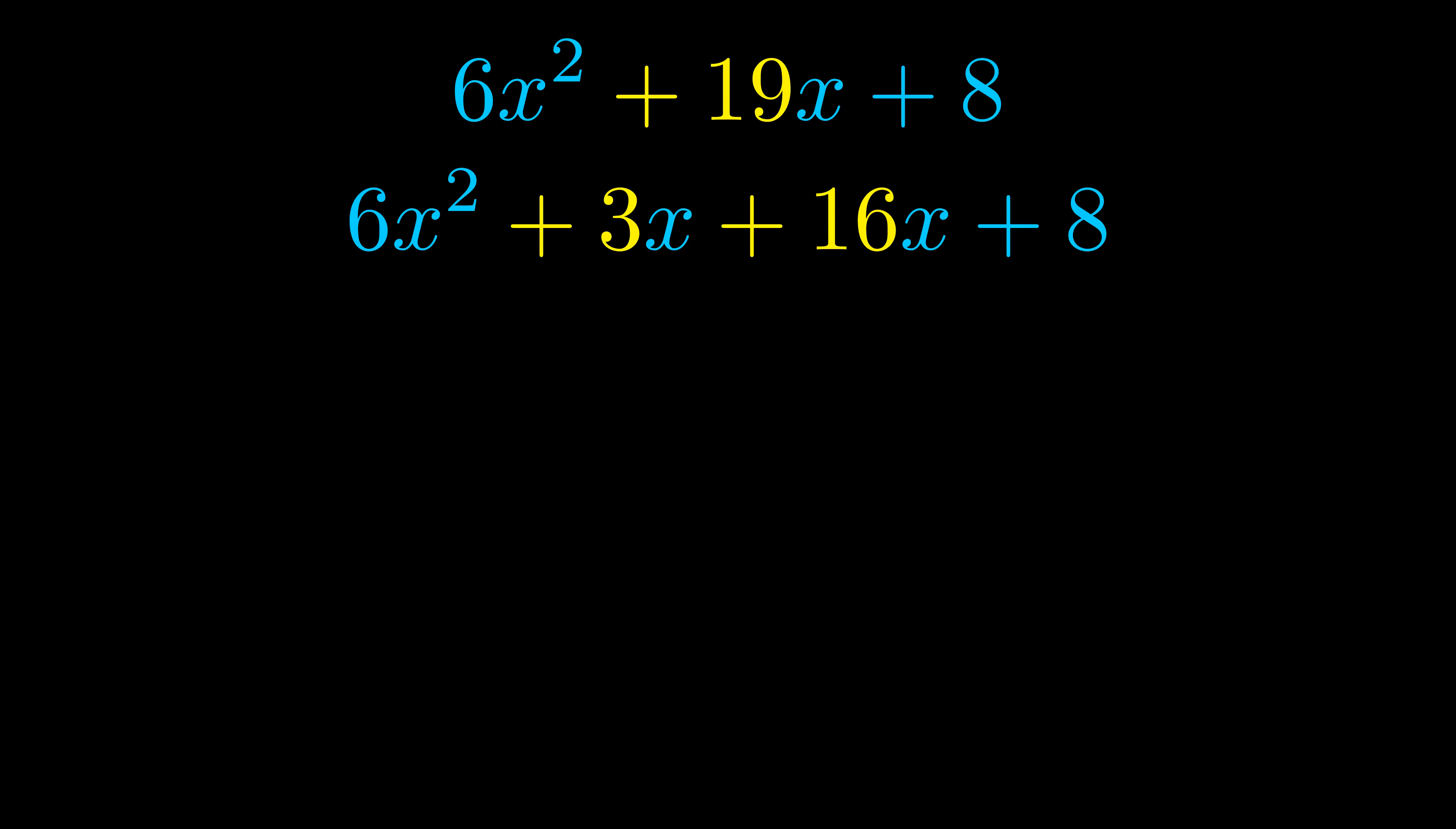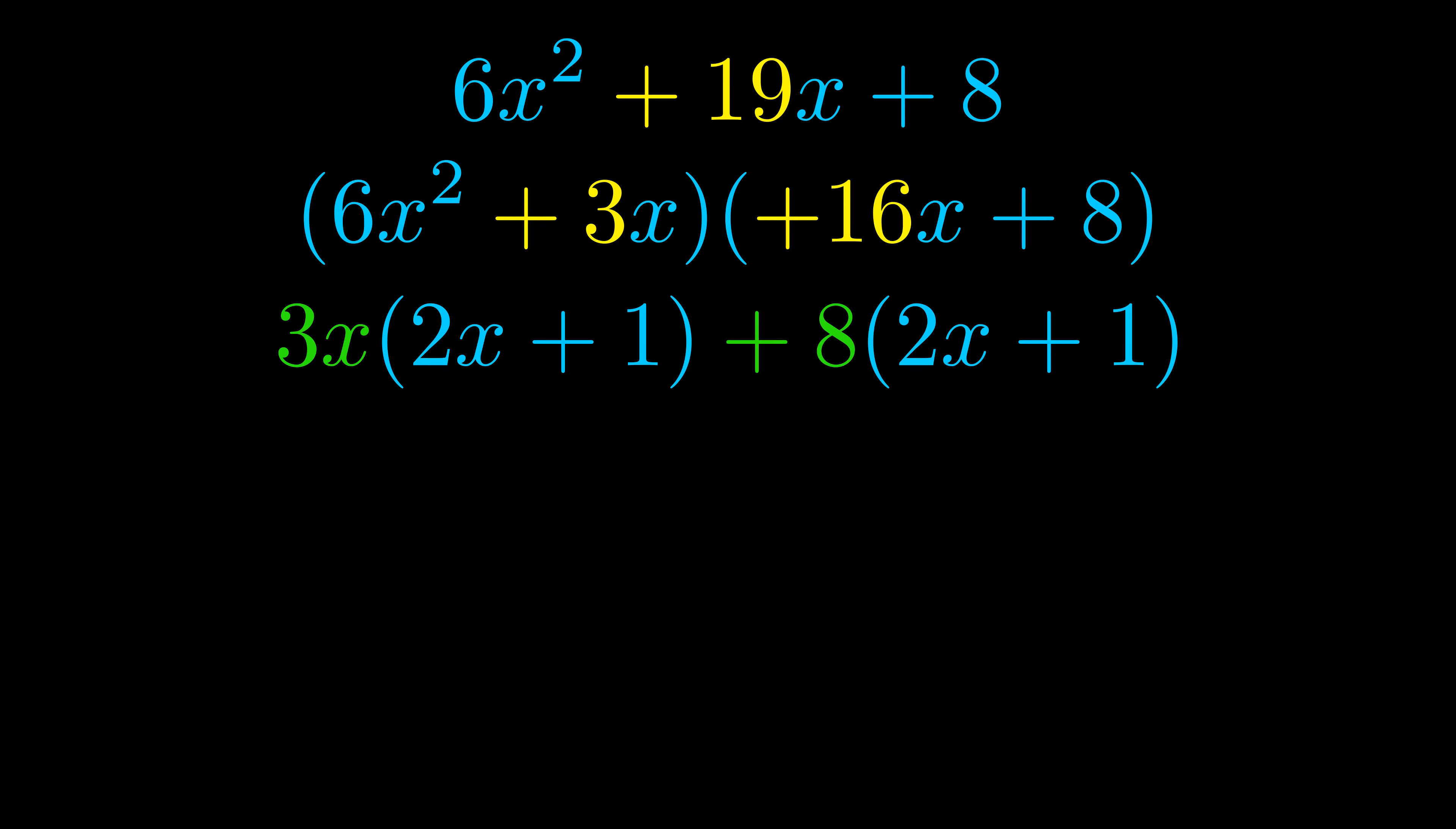Once we've done this we go ahead and we put parentheses around the first term and the last term and we do that so that we can take the greatest common factor out of both terms. We can see the greatest common factor is now outside in green. Notice also how what remains inside of the parentheses is the same in both cases.